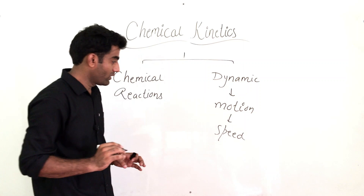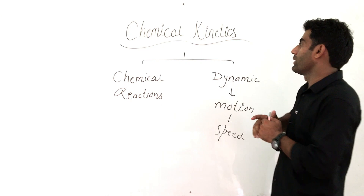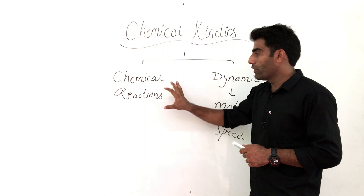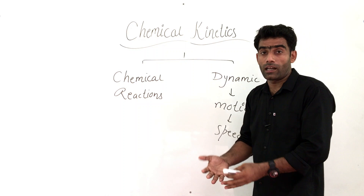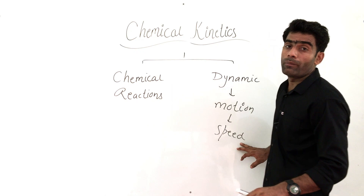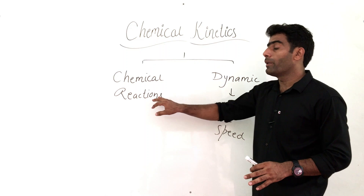So when we talk about chemical kinetics, the root is the chemical word, which represents chemical reaction, and kinetics ultimately represents speed. So word meaning of chemical kinetics is: we have to discuss the speed of a chemical reaction. Speed of a chemical reaction — just like we generally use speed for an object in motion, for a chemical reaction we use the word rate.